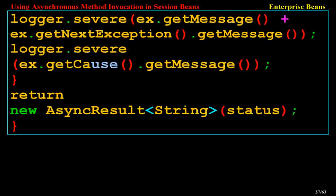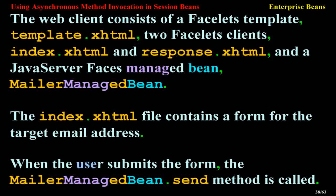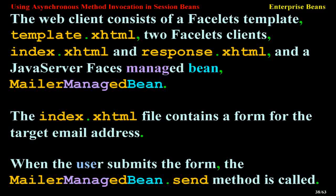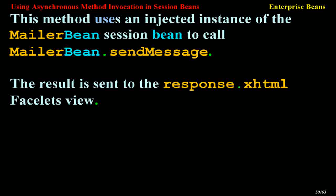The web client consists of a Facelets template (template.xhtml), two Facelets clients (index.xhtml and response.xhtml), and a JavaServer Faces managed bean, MailerManagedBean. The index.xhtml file contains a form for the target email address. When the user submits the form, MailerManagedBean.send() is called, which uses an injected instance of MailerBean to call mailerBean.sendMessage(). The result is sent to the response.xhtml Facelets view.